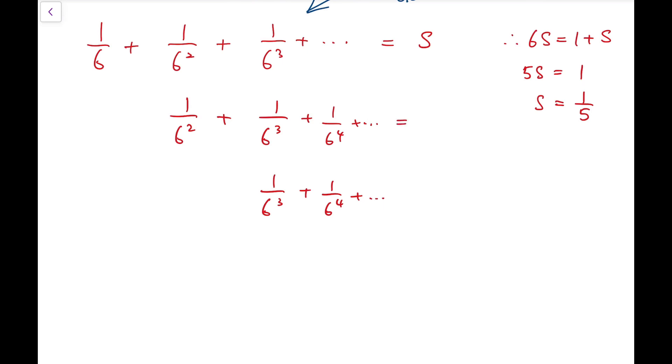Now, if we take a look at each series, I've now written 3 rows of series, for the one labeled in green, there's actually all terms in s multiplied by 1 over 6. So 1 over 6 becomes 1 over 6 squared, 1 over 6 squared becomes 1 over 6 cubed, and 1 over 6 cubed becomes 1 over 6 to the 4, and so on. So I can say that the second row is actually 1 over 6s.